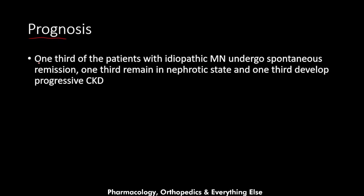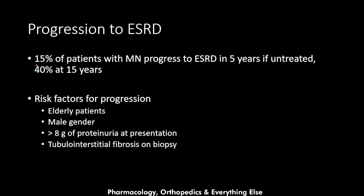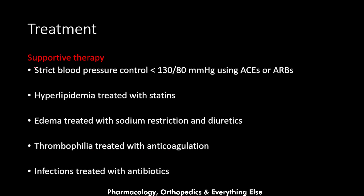Regarding prognosis, one-third of patients with idiopathic membranous undergo spontaneous remission, one-third remain in a nephrotic state, and one-third develop progressive chronic kidney disease. 15% progress to end-stage renal disease in five years if untreated, and 40% at 15 years. Risk factors for progression include elderly age, male gender, more than 8 grams of proteinuria at presentation, and tubular interstitial fibrosis on biopsy. Supportive therapy includes strict blood pressure management under 130/80 mmHg using ACE inhibitors or ARBs.